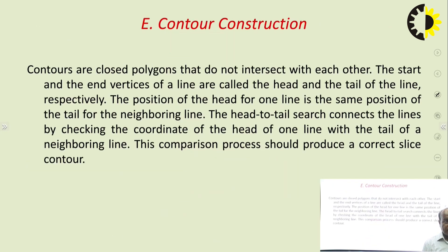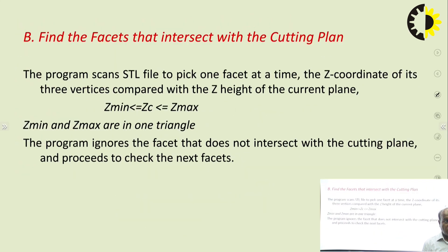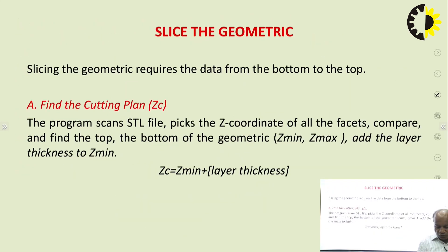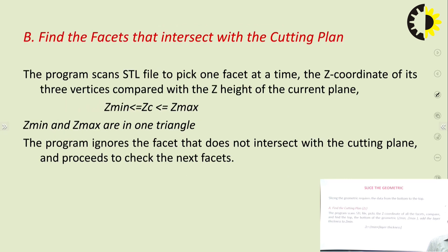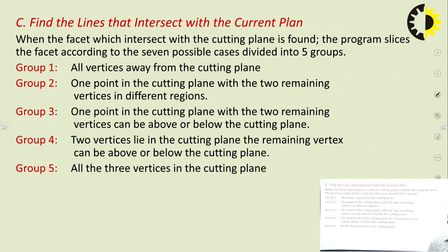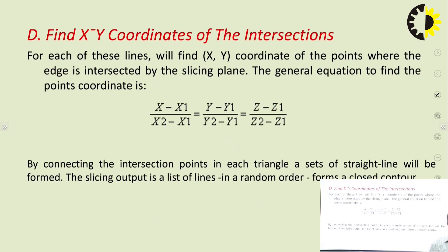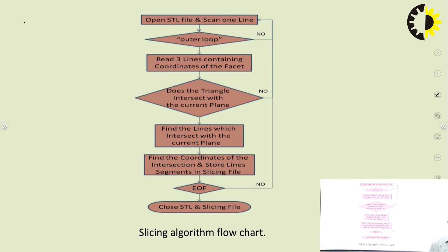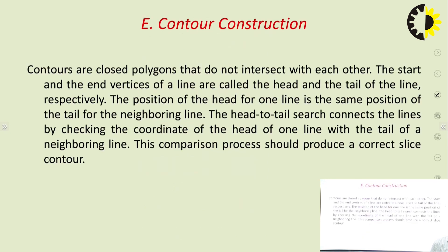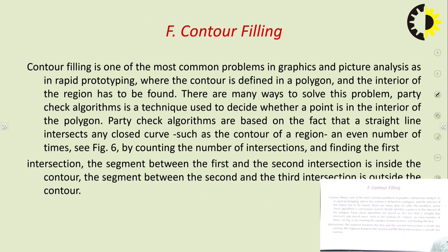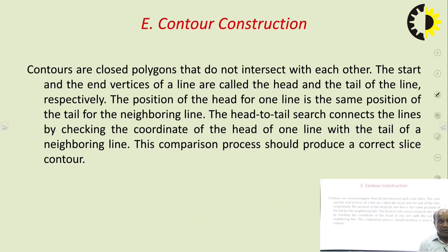So, summarizing all five operations for the slicing algorithm: first, find the cutting plane; second, find the facets that intersect with the cutting plane; third, find the lines that intersect with the current plane; fourth, find the X, Y coordinates of the intersection; fifth, construct the contour; and finally, perform the contour filling operation. This is all about how we develop the slicing.